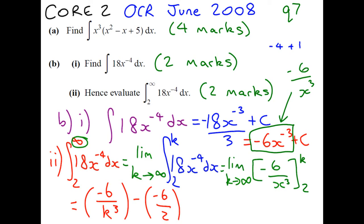Now think about the first bracket. You've got a number minus 6 divided by a number cubed. And the number k is getting so big that it's going closer and closer to the infinite. Now if you divide anything by a huge, huge number...